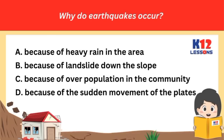Why do earthquakes occur? A. Because of heavy rain in the area. B. Because of landslide down the slope. C. Because of overpopulation in the community. D. Because of the sudden movement of the plates.